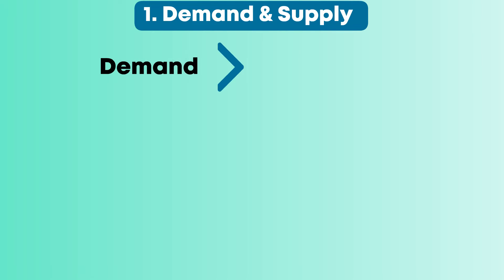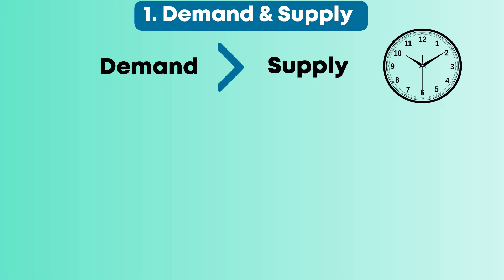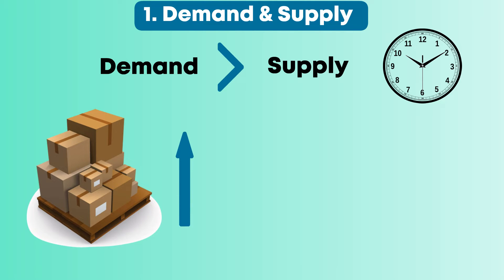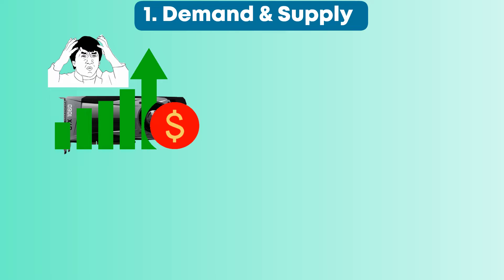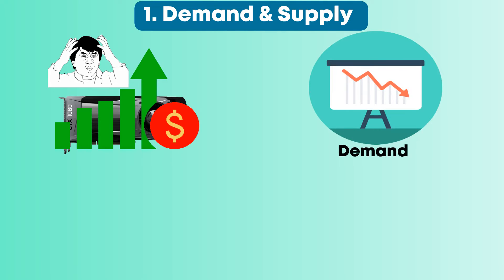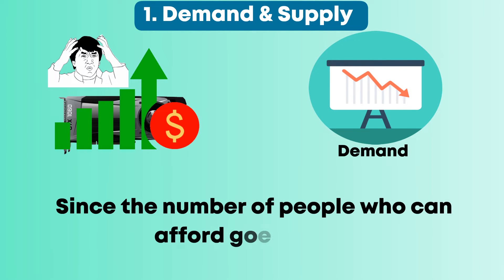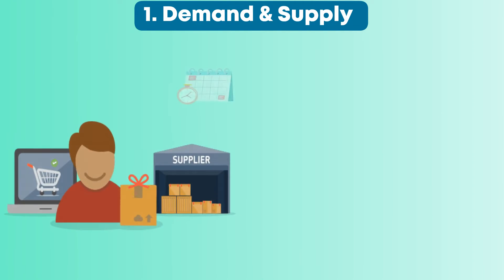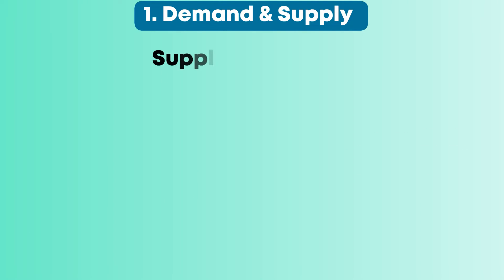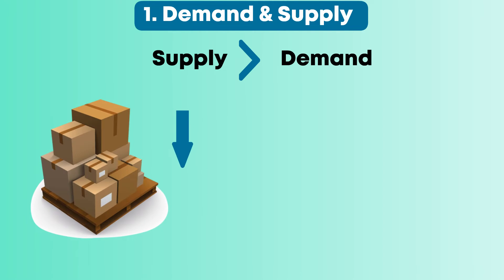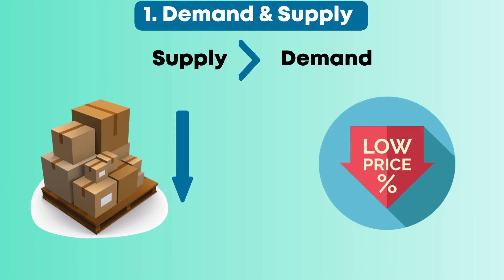When demand exceeds supply over a period, suppliers either increase the supply or increase the prices. As prices go up, demand would ideally reduce since the number of people who can afford goes down. Conversely, when supply surpasses demand, suppliers would either have to cut down on their supply or decrease the prices of the products being sold.